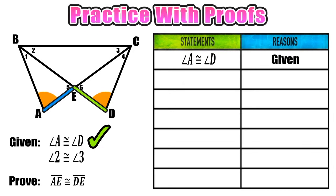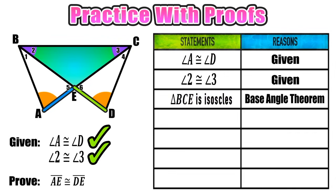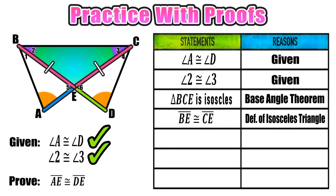Our first given is that angle A and angle D are congruent. Our second given tells us that angle 2 and angle 3 are congruent, and we label that on the diagram. With our givens used up, we notice that triangle BCE has two congruent base angles — angles 2 and 3 — so triangle BCE is isosceles by the base angle theorem. Since it's isosceles, the sides opposite the congruent angles are also congruent, meaning BE is congruent to CE by the definition of an isosceles triangle.